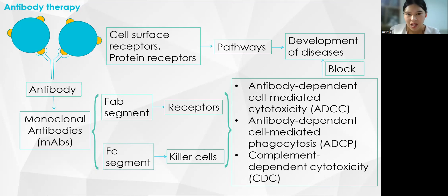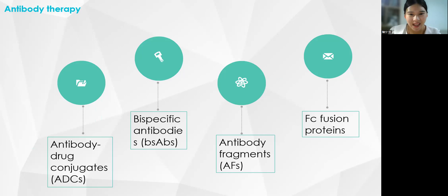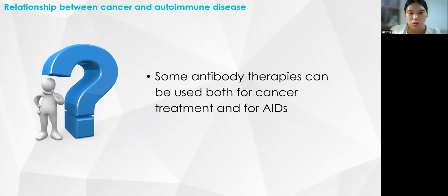On this basis, antibody therapies such as ADCs, AFs, BiSAbs, and Fc fusion proteins have been developed. Some drugs can be used to treat both cancer and autoimmune diseases. This article summarizes existing antibody therapies for cancer and autoimmune diseases in order to find drugs with bidirectional therapeutic effects.